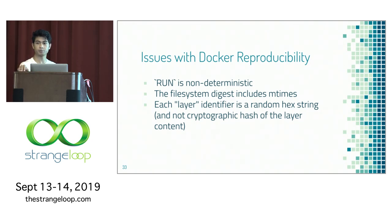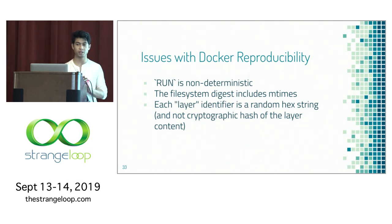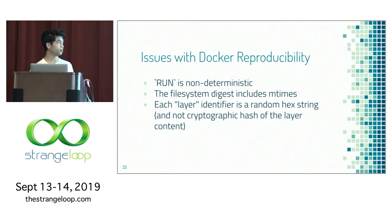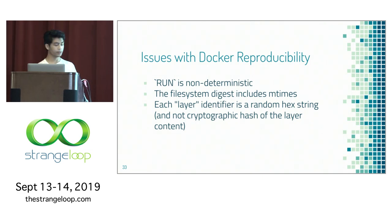The filesystem digest also includes mtimes, and when it makes the layer hash it takes those into account. It also includes a random hex string as an identifier, not just the cryptographic hash of the layer content.